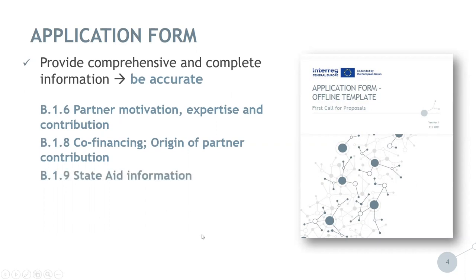Then there is section B.1.9, State Aid Information. In this section, applicants — potential future project partners — actually provide their own assessment of the State Aid relevance of planned project activities. They also identify if there is potential indirect aid to be granted to target groups and final beneficiaries. This self-assessment builds on the following key questions: Is the partner involved in economic activities within the project? If yes, does the partner receive a selective advantage throughout the project? And last, does any third party receive a selective advantage through the project which it would not have obtained under normal market conditions?